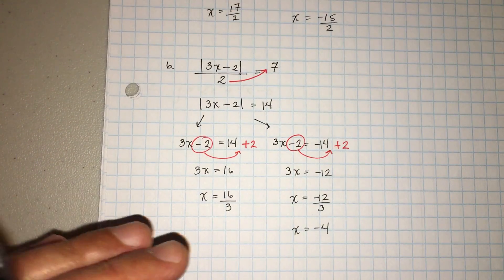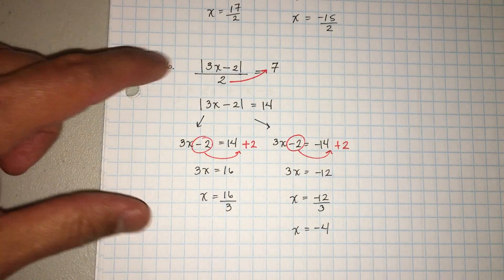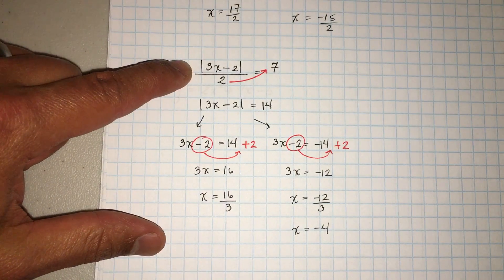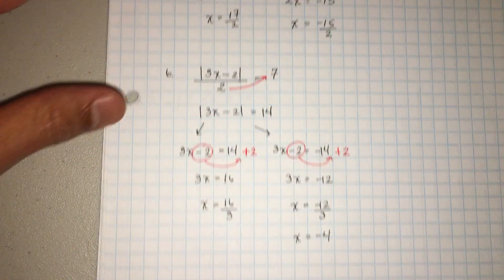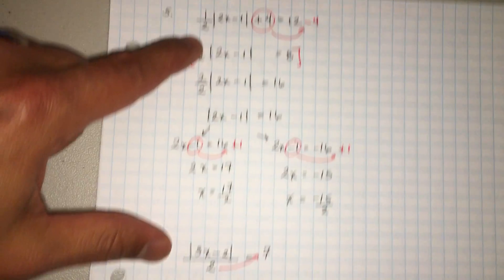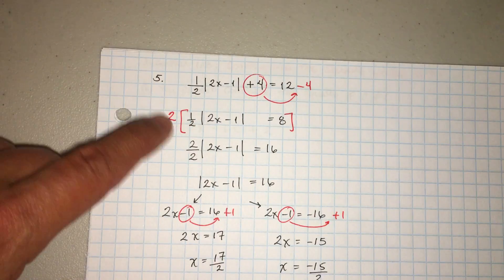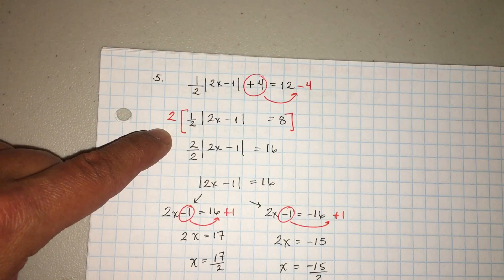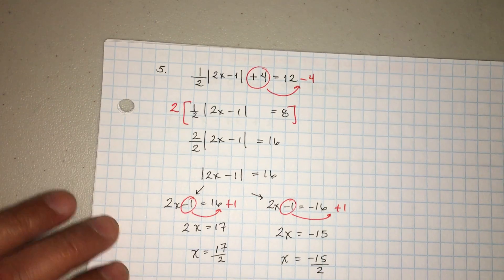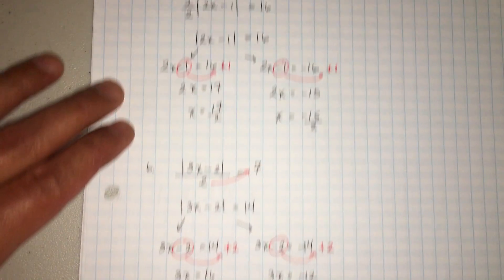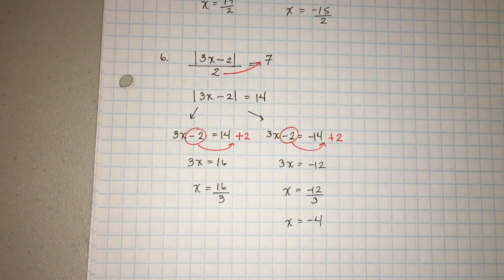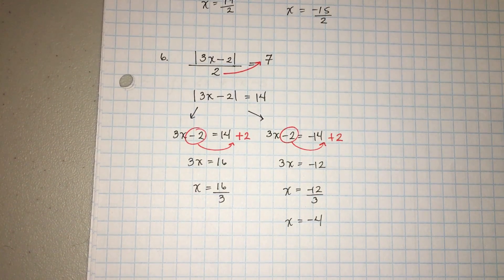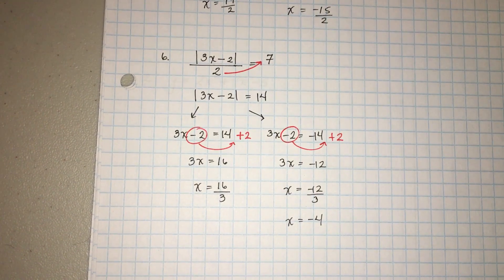So the whole thing is you want to isolate the absolute value, undo the order of operations, and if you ever get a fraction, just multiply to get rid of it. Hopefully that helps — espero que les haya ayudado. Para la próxima. Bye.